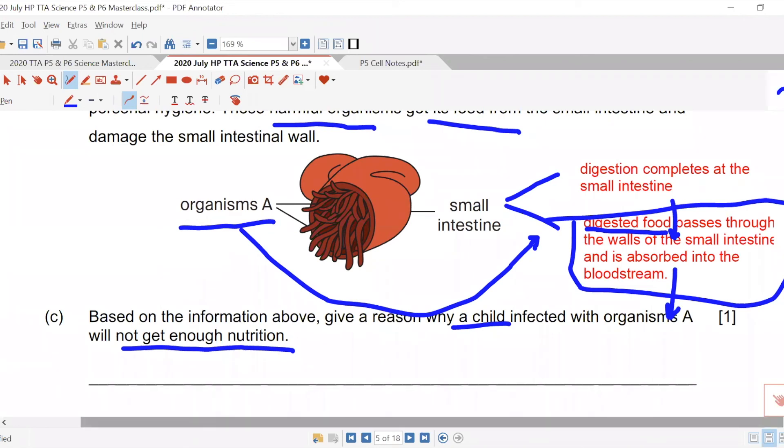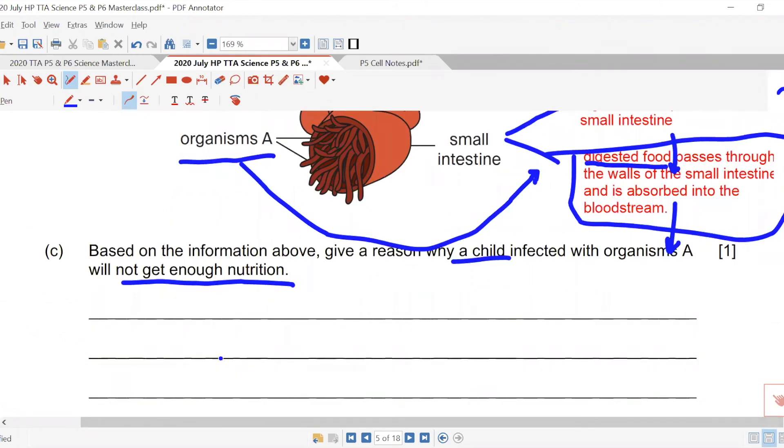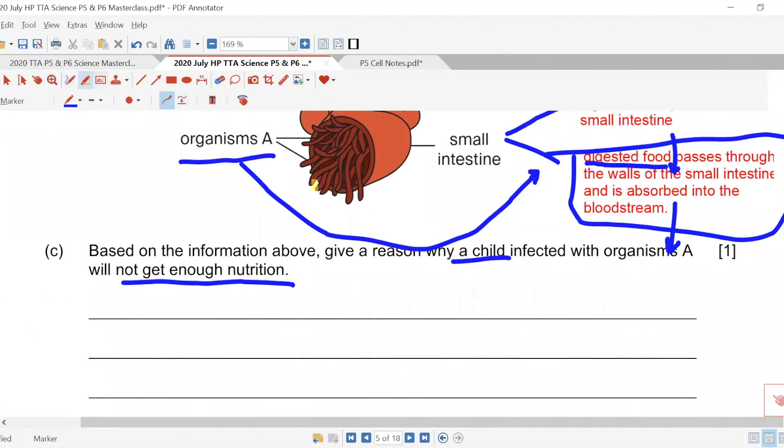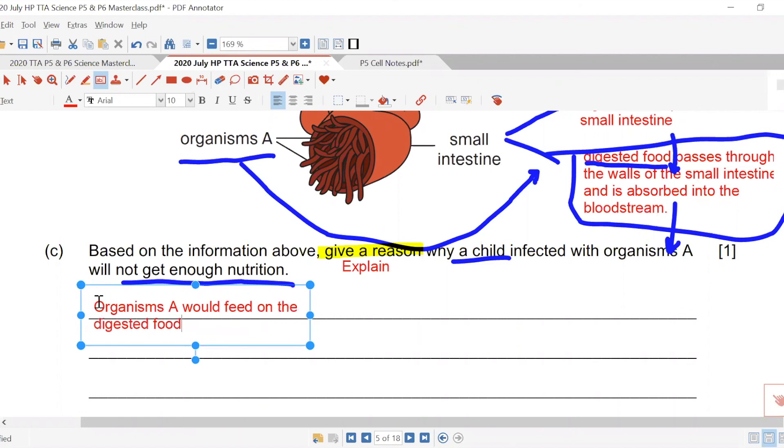Just tell me everything which is the part and function as usual. They ask you to give a reason. Give a reason is explain. So let's talk about part and function. Organism A would feed on the digested food in the small intestine. Not everything is gone, only we need to eat some maybe.